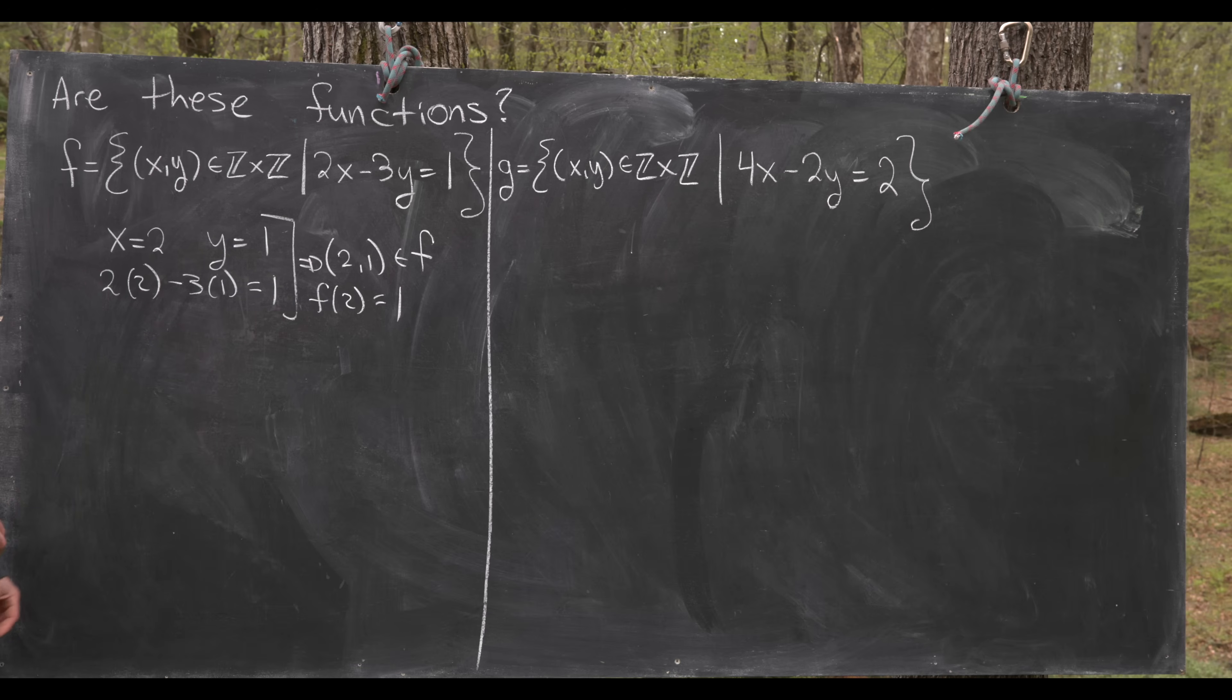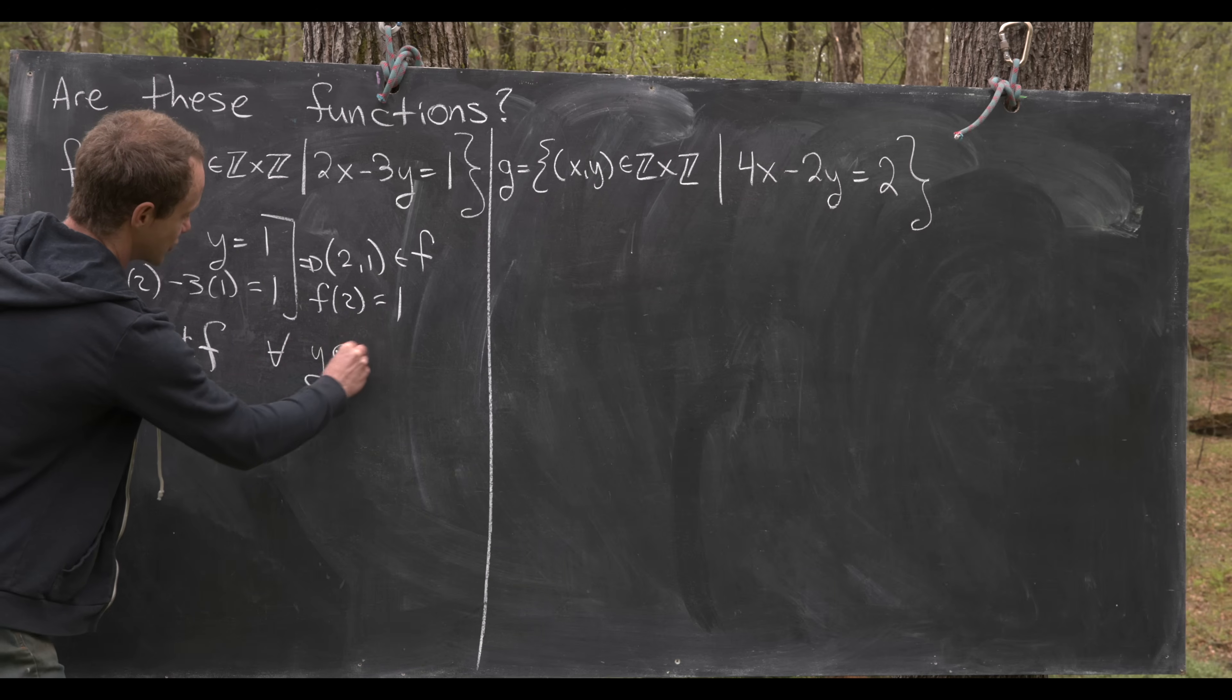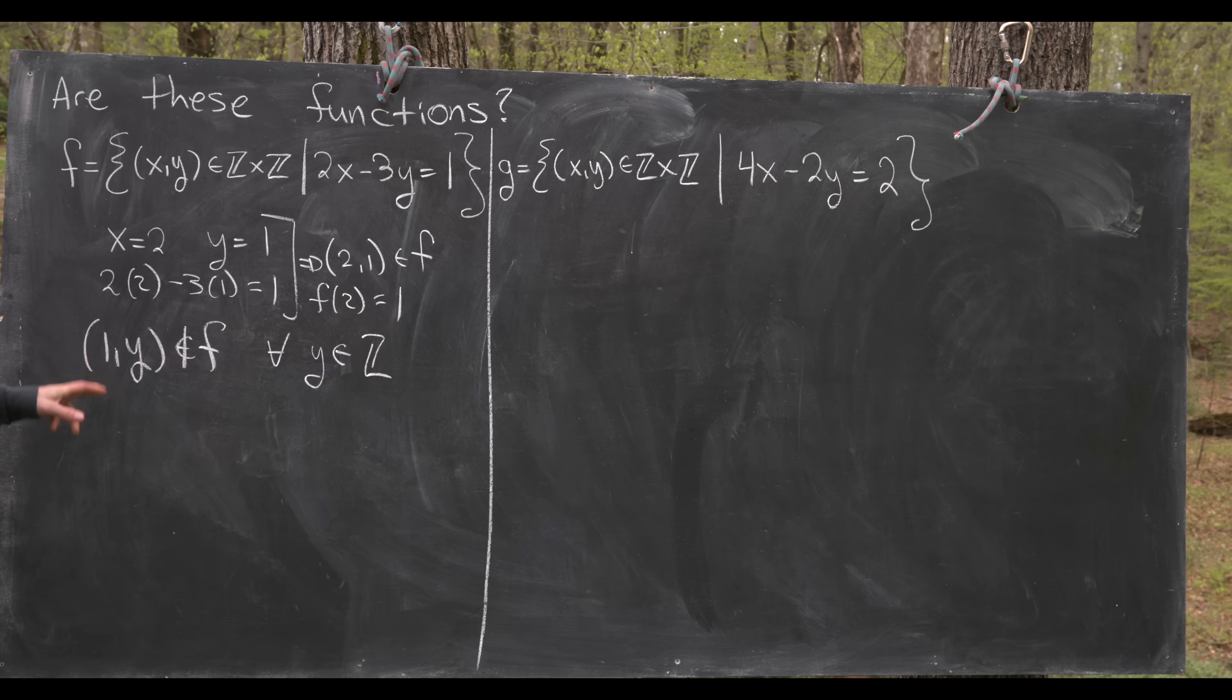But that doesn't necessarily mean that this is a function and in fact this is not a function. And that's because (1,y) is not an element of f for all integers y. In other words 1 is not paired with anything in the codomain which is also integers in this case. And how can we check that?